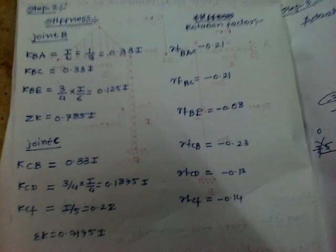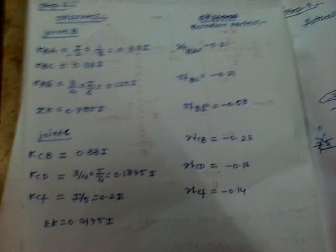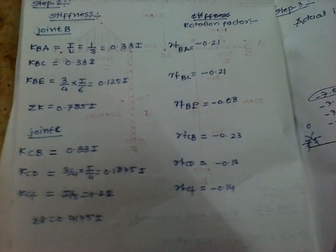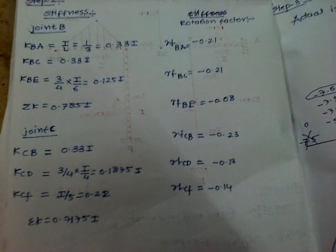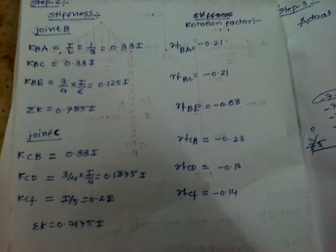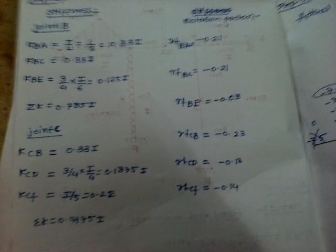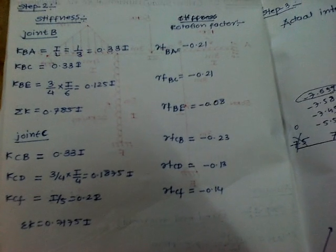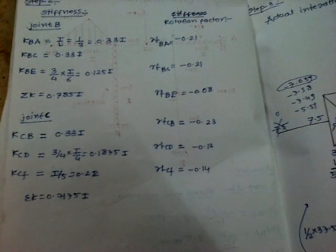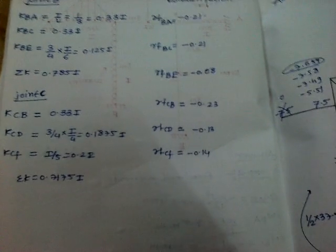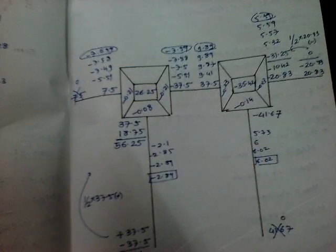We get summation to determine the rotation factor. In rotation factor I get, for example, 0.33 divided by 0.785 multiplied by minus half. Minus half is never multiplied in MDM. In MDM to determine distribution factor we get 0.33 upon 0.785 only. Similarly, I get all rotation values.